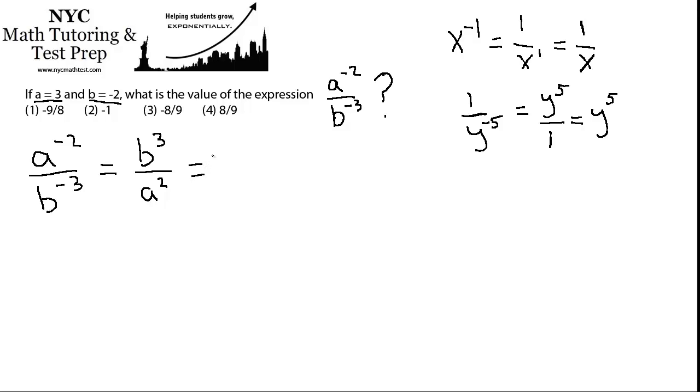So b is negative 2. So now notice what I do when I substitute. I'm putting negative 2, I'm putting it in parentheses. Because it has a negative sign, that's part of what b equals. So it's not 2 that's being cubed, it's the quantity negative 2 that's going to be cubed. And that's important.